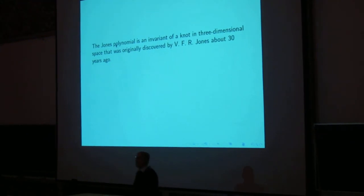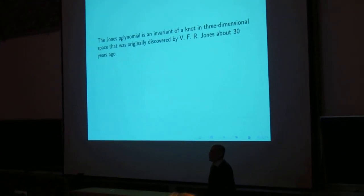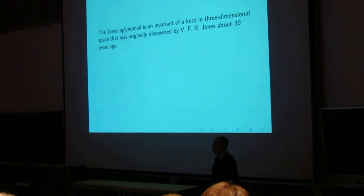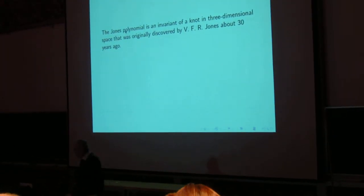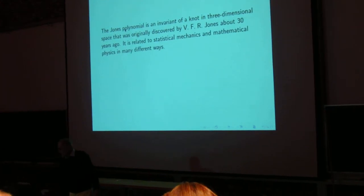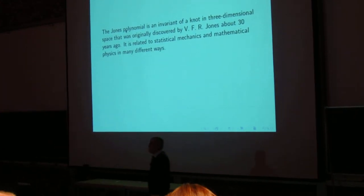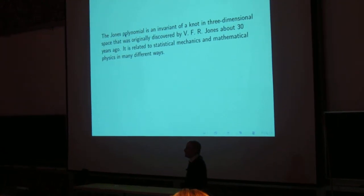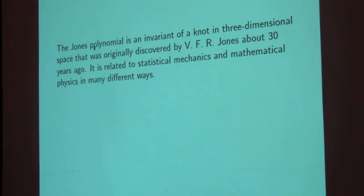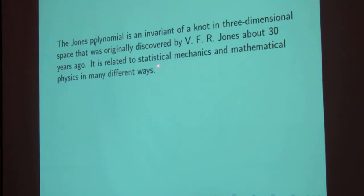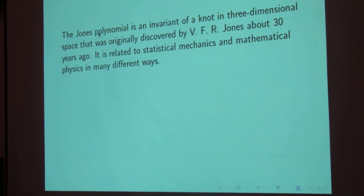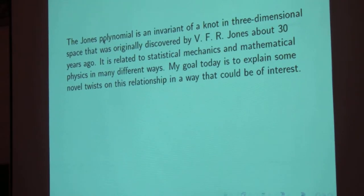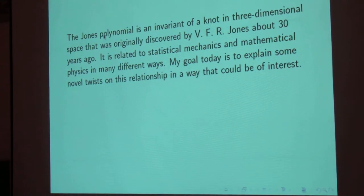So the Jones polynomial has to do with knots in ordinary three-dimensional space. The Jones polynomial is an invariant, kind of like three-dimensional space that Jones originally discovered by V.F.R. Jones about 30 years ago. It is related to statistical mechanics and mathematical physics in many different ways. And today I'll be telling you a few new twists on this relationship that could be of interest.